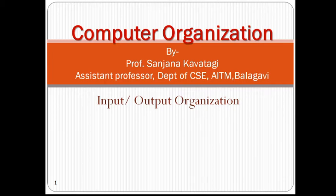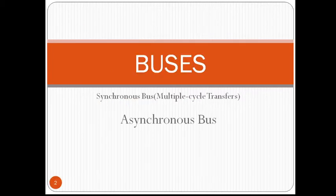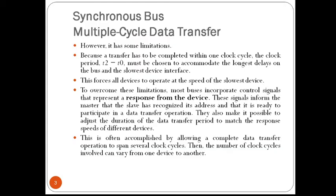In the previous video, we studied about synchronous bus. The scheme described with the simple design for the device interface has some limitations, because a transfer has to be completed within one clock cycle. So the clock period should be chosen to accommodate the longest delays on the bus and the slowest device interface, forcing all devices to operate at the speed of the slowest device.